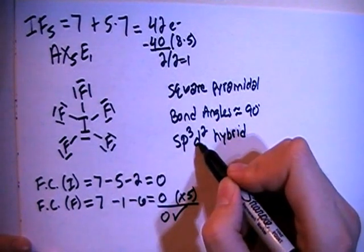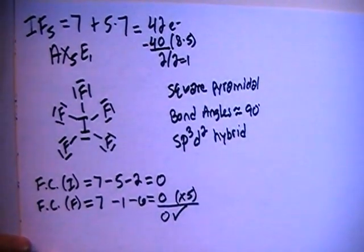So you have one S, three P's, two D's for a total of six hybrid orbitals to match the six electron groups.